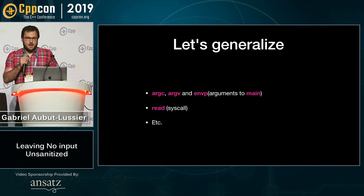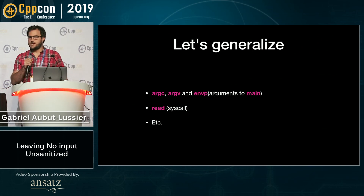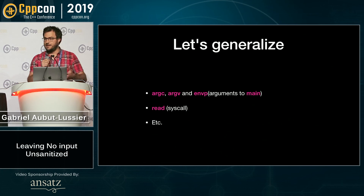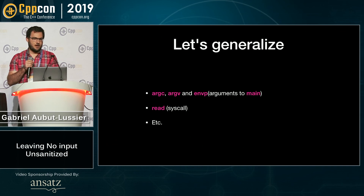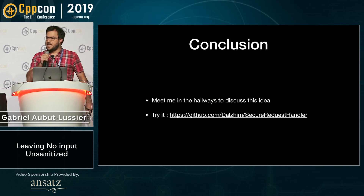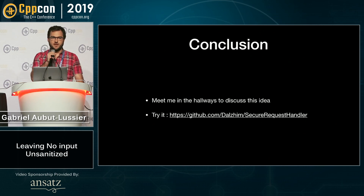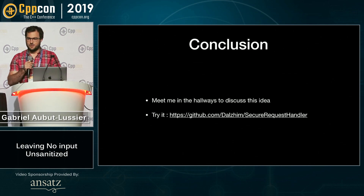While preparing this presentation, I realized: I did a proof of concept that works for HTTP requests, but there's no reason we couldn't generalize a bit more for any tainted inputs, really. You could imagine validating inputs to the main function this way, or even stuff you're reading from a syscall. My name is Gabriel Aubussier, and if you're interested in discussing these ideas in the hallways, feel free to talk to me. You can also test the implementation from my GitHub repo with the link shown here. Thank you for your time, everyone.